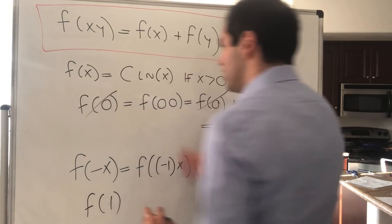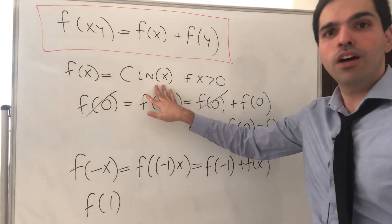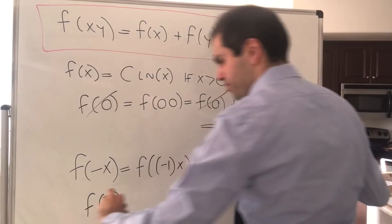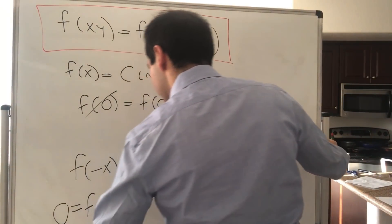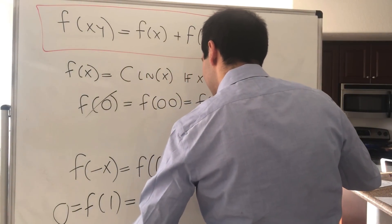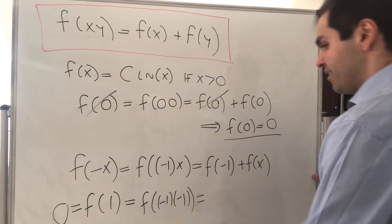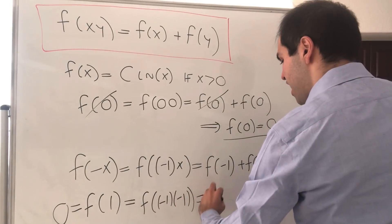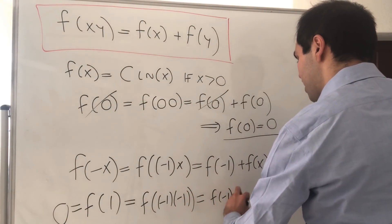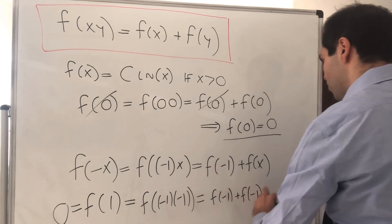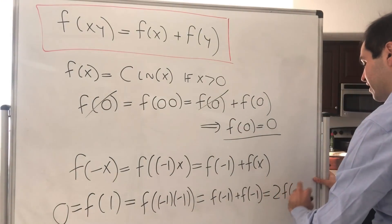So f of 1, which is c times ln of 1, which is 0, that's the same thing as f of negative 1 times f of negative 1. And what we get is this is f of negative 1 plus f of negative 1, which is 2 times f of negative 1.